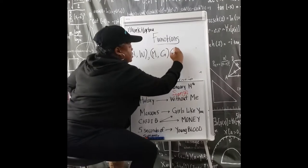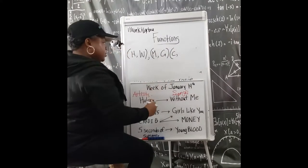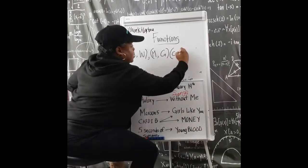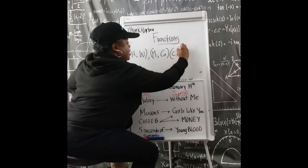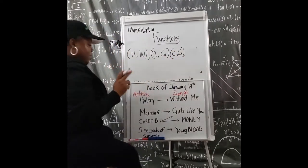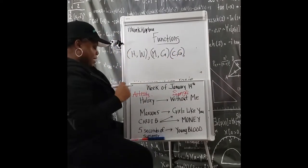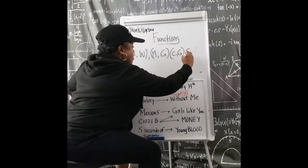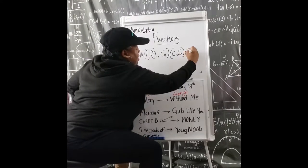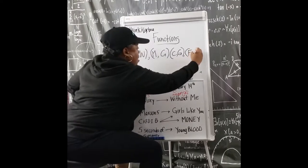And then Maroon 5 is M and a G for the Girls. And Cardi B, C. So C and G. Oh, I like this one because something great is going to happen. Something great is about to happen. And then, 5 Seconds, I use that, F and Y.